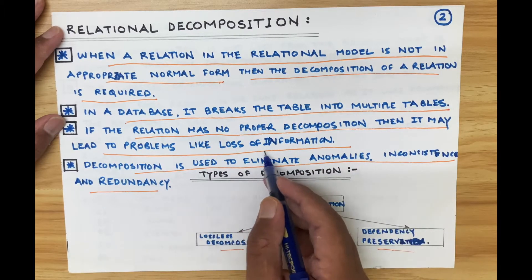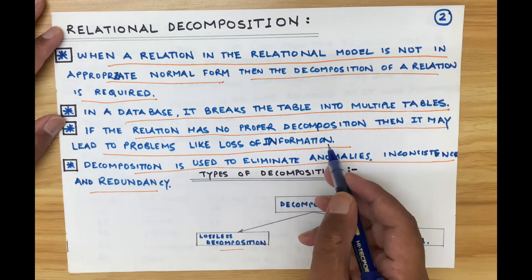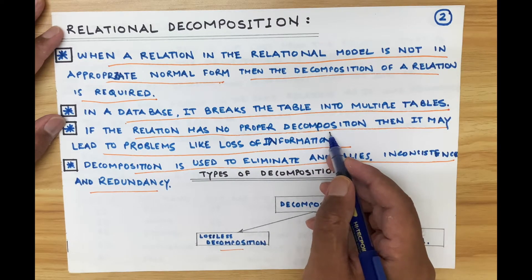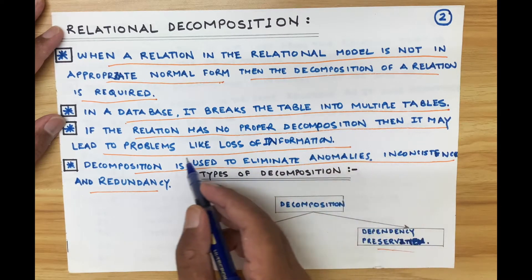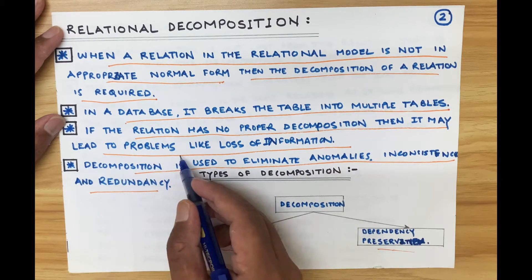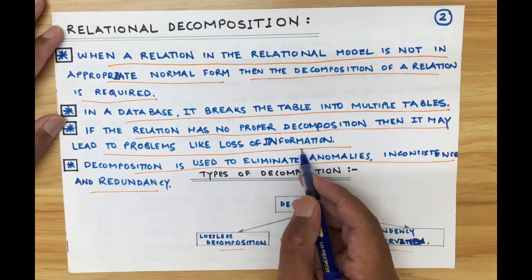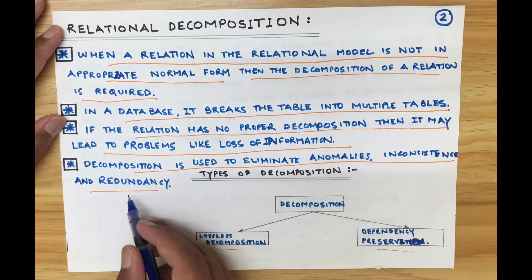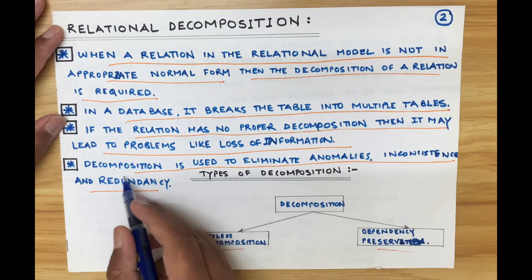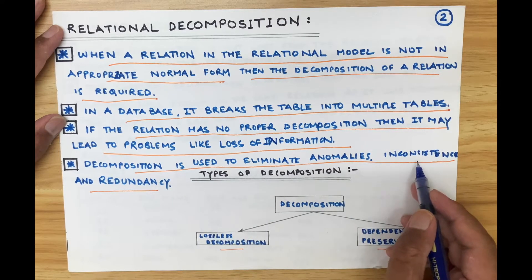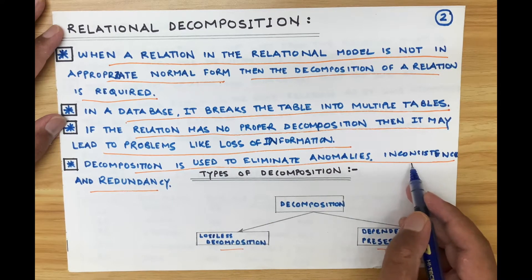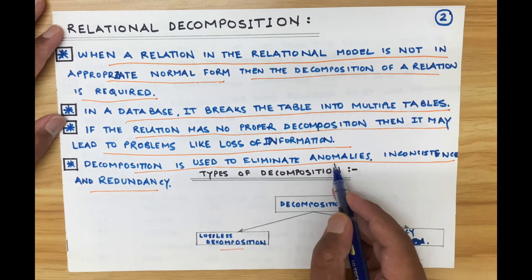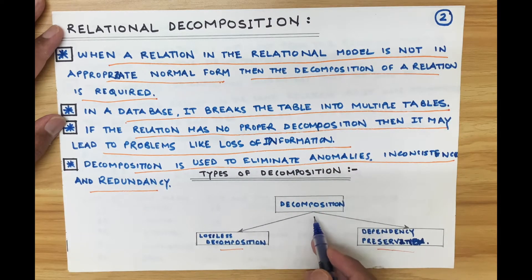If the relation has no proper decomposition, it may lead to problems like loss of information. If you keep decomposing the table into multiple tables improperly, it can lead to loss of information. Decomposition is used to eliminate anomalies, inconsistencies, and redundancy. Redundancy means repetition, inconsistency means not being in a consistent state, and anomalies are some odd behavior.